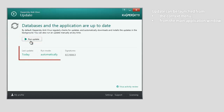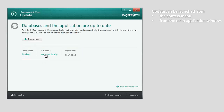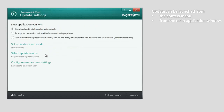The update window displays information about the current state of Kaspersky Antivirus 2014 databases, the date of the last update, and the run mode. To configure the update settings — run mode, update source, and rights to run updates under a different user account — click the link stating the run mode name.